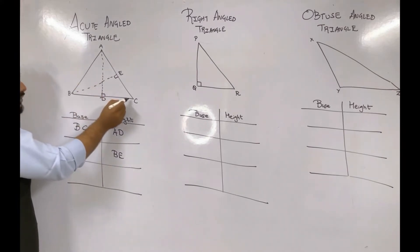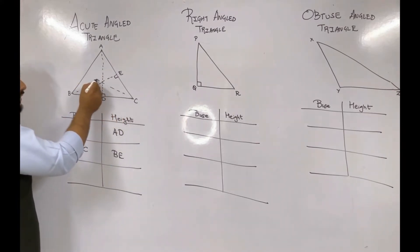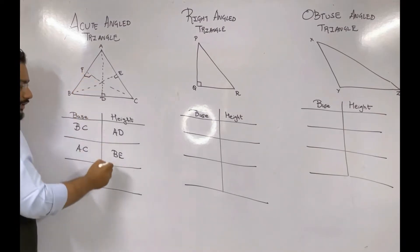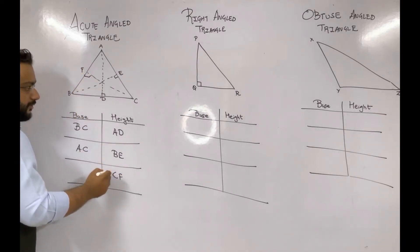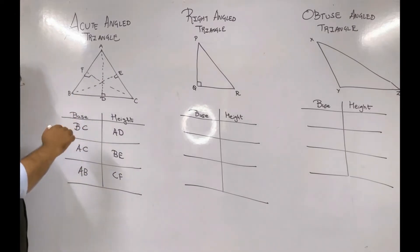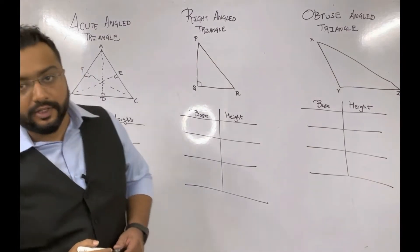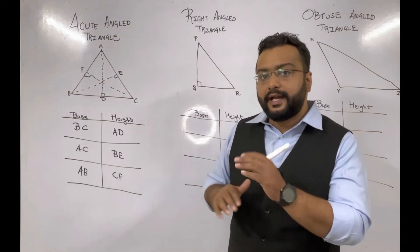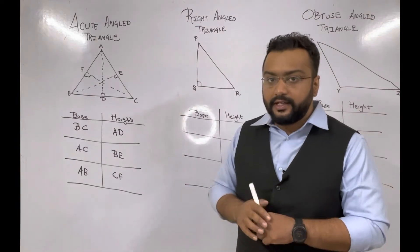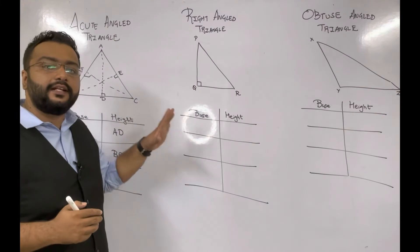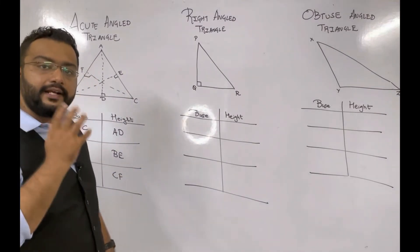We have one more side AB. Its height will start from its opposite vertex C, and we name that point F. So CF is the height corresponding to base AB. We now have three bases and three corresponding heights.